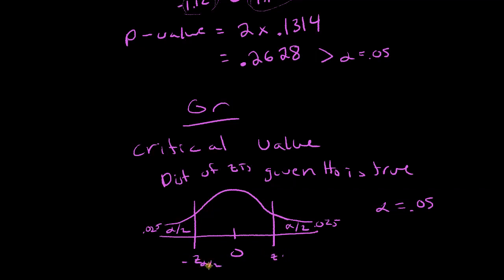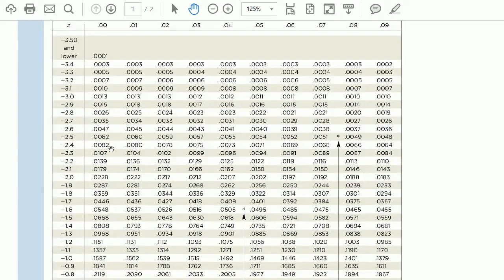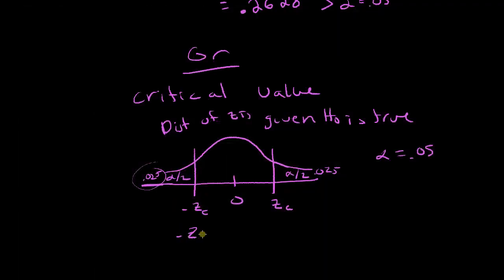To find the negative critical value Z_C, I look up where the area equals 0.025 in the table. That gives negative 1.96, so the negative critical value is −1.96 and the positive critical value is +1.96.